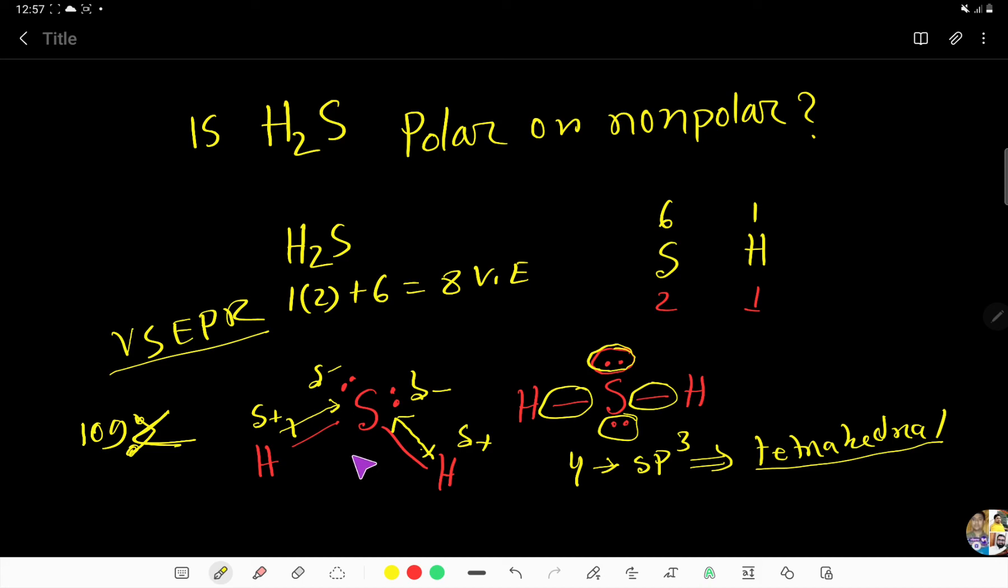So, due to bent shape or asymmetrical shape of hydrogen sulfide, the bond dipole moment does not cancel each other. So, the net dipole moment for H2S or hydrogen sulfide molecule will not be zero. So, since H2S has net dipole moment, molecular dipole moment, net molecular dipole moment, this is polar.